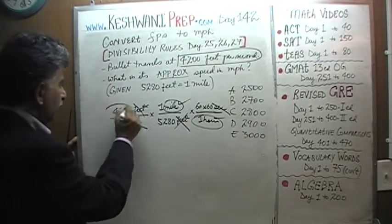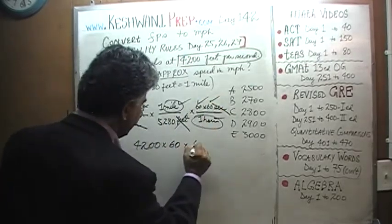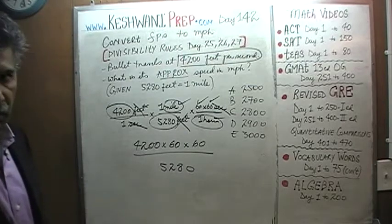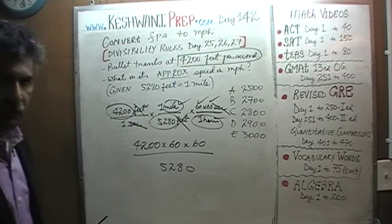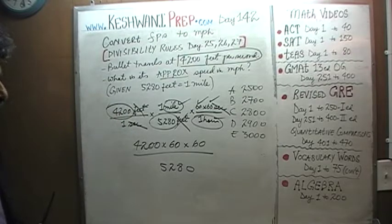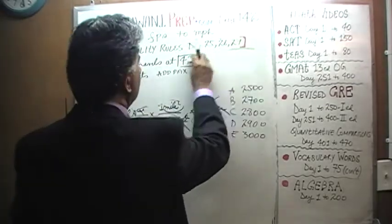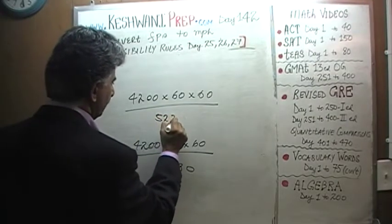And the number that we need to evaluate is 4200 times 60 times 60 over 5280. Tell you what, I'm going to give you an unobstructed view for five seconds and then I'm going to erase everything and we'll do this thing on the top. We're going to erase everything. Now we need the room. 4200 times 60 times 60 over 5280.